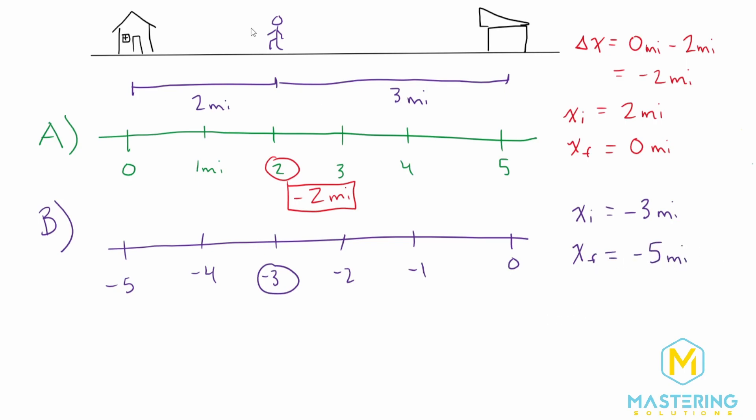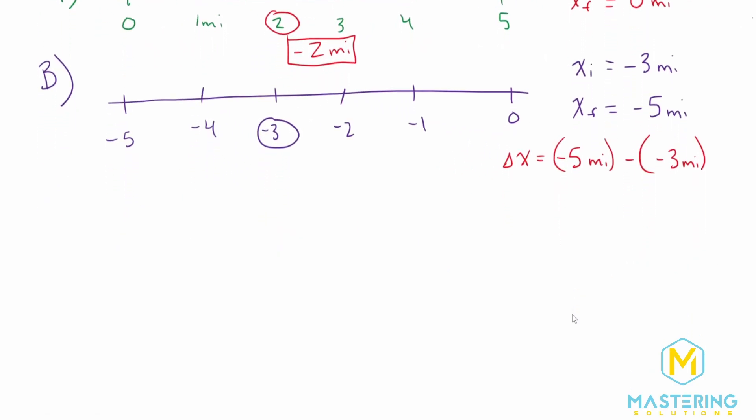So now when we plug this into our equation, we have delta x is equal to final, a negative five miles, minus where she started, which we said was a negative three miles.